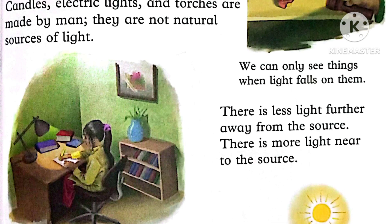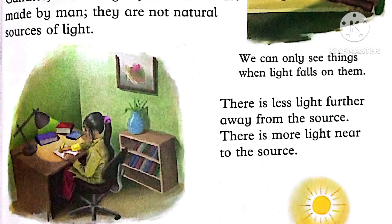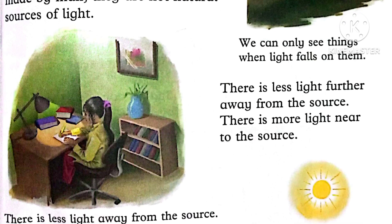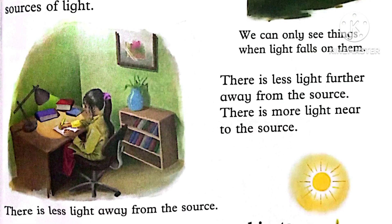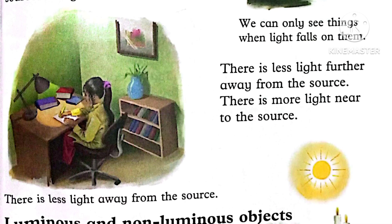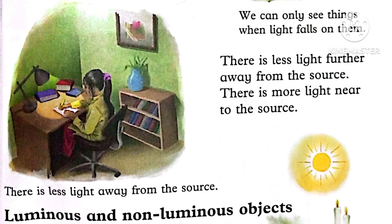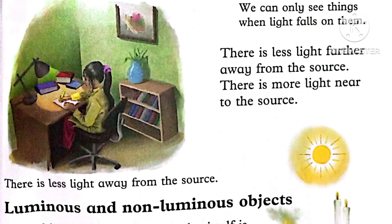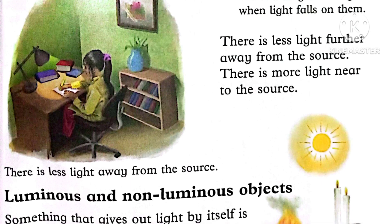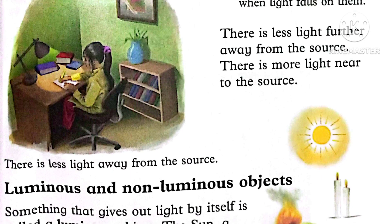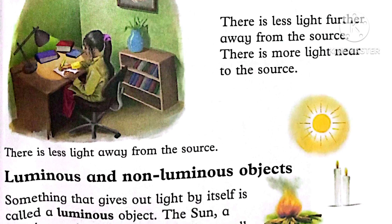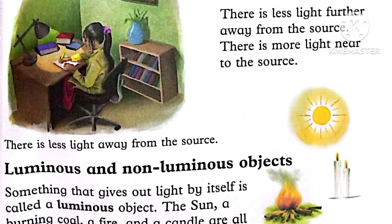There is less light further away from the source. When we go away from an electric light, there will be less light. There is more light near to the source — when we are close to the source, the light will be more. In the picture, there is less light away from the source.